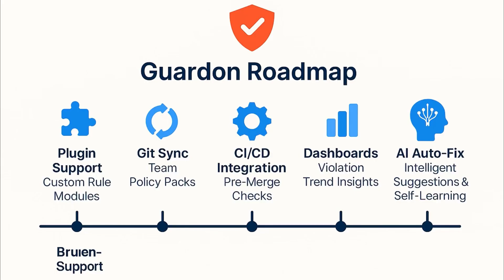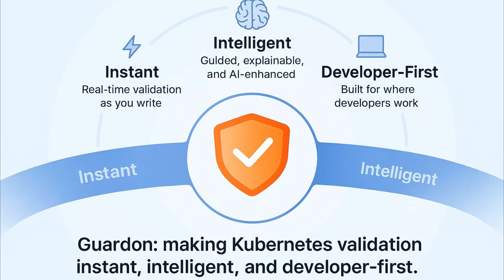The roadmap ahead builds on this foundation, adding plugin support for custom rule modules, GitSync team policy packs, CI/CD integrations for pre-merge checks, and dashboards that visualize violation trends over time. Looking further ahead, I'm experimenting with AI-driven autofixes, where the system learns from your environment and suggests best-fit corrections automatically. The vision is simple: make Kubernetes configuration validation instant, intelligent, and developer-first.